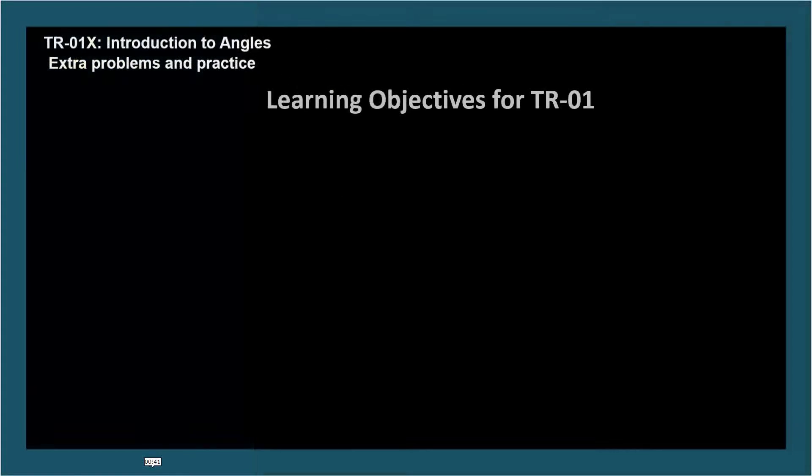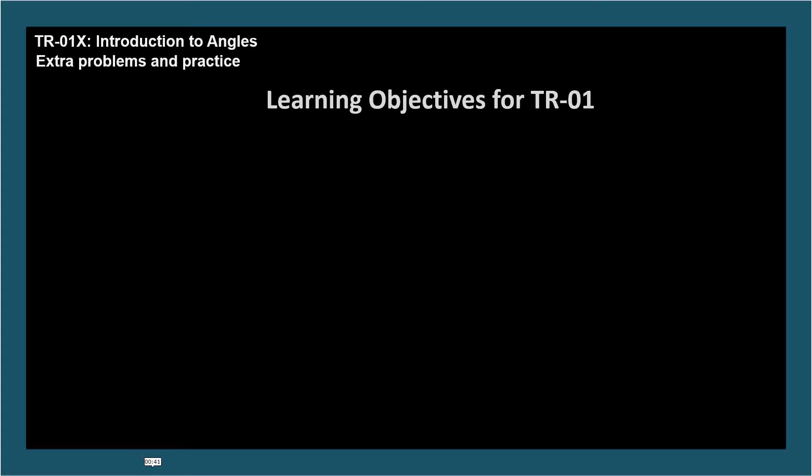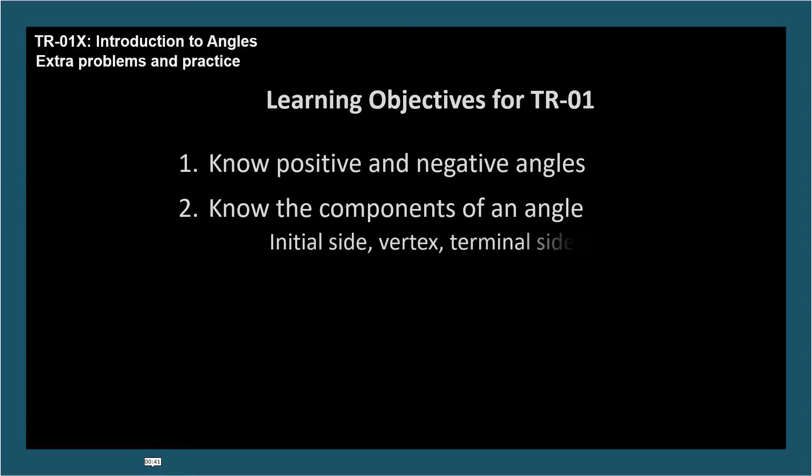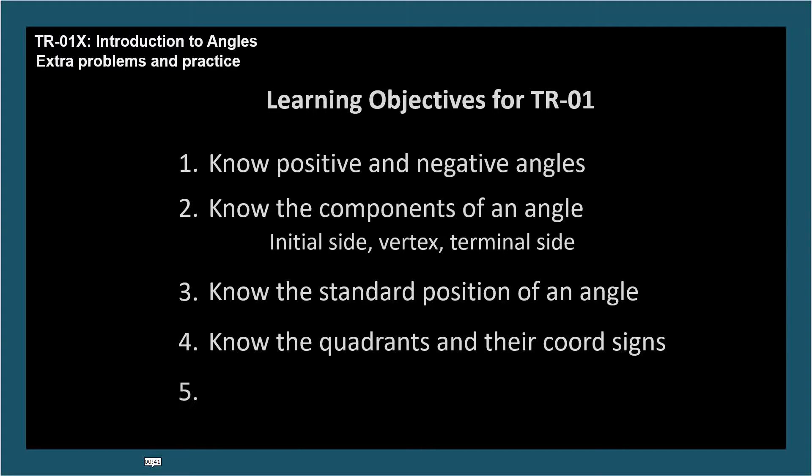There are five learning objectives for TR-01. Know positive and negative angles. Know the components of an angle, meaning the initial side, vertex, and terminal side. Know the standard position of an angle. Know the quadrants and their coordinate signs. Know angle labels and how we identify them in diagrams.